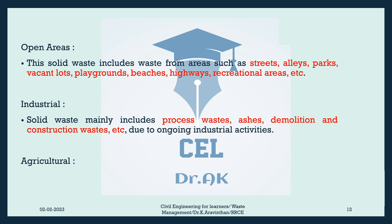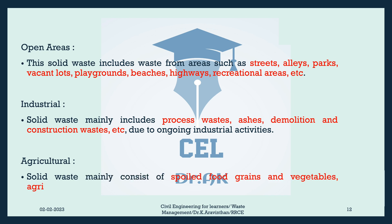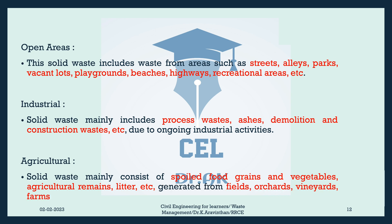Agricultural: Solid waste mainly consists of spoiled food grains and vegetables, agricultural remains, litter, etc., generated from fields, orchards, vineyards, farms, etc. Thank you. Happy learning. See you again.